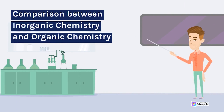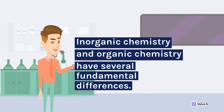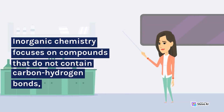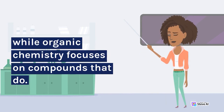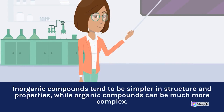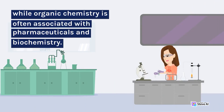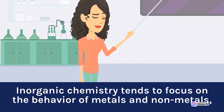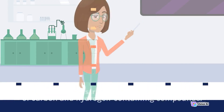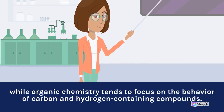Comparison between inorganic chemistry and organic chemistry. Inorganic chemistry and organic chemistry have several fundamental differences. Inorganic chemistry focuses on compounds that do not contain carbon-hydrogen bonds, while organic chemistry focuses on compounds that do. Inorganic compounds tend to be simpler in structure and properties, while organic compounds can be much more complex. Inorganic chemistry is often associated with industrial processes and materials science, while organic chemistry is often associated with pharmaceuticals and biochemistry. Inorganic chemistry tends to focus on the behavior of metals and non-metals, while organic chemistry tends to focus on the behavior of carbon and hydrogen-containing compounds.